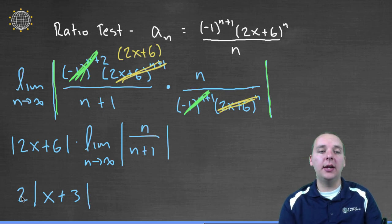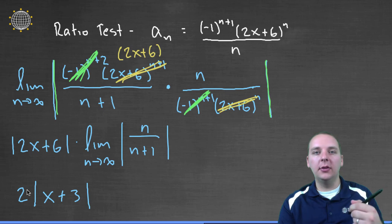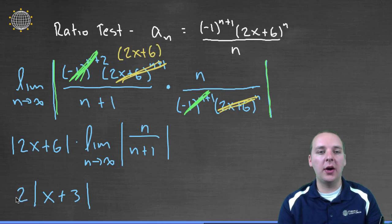Now why does the 2 not need absolute values anymore? Well, when we factor the 2 out, there is no x here, and so 2 is already positive, so he doesn't require absolute values. The term with the x, the x plus 3, that's positive or negative depending on x, and so he has to keep absolute values.